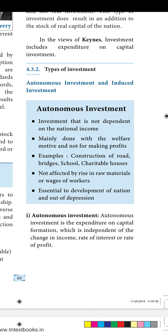Autonomous investment is not depending upon any national income. Just as some autonomous colleges function independently — they won't depend upon the government's money or income. They may follow a university's syllabus but they will set a separate question paper, conduct separate examinations, and do the correction themselves alone. They won't depend upon any other. They will do their work alone.